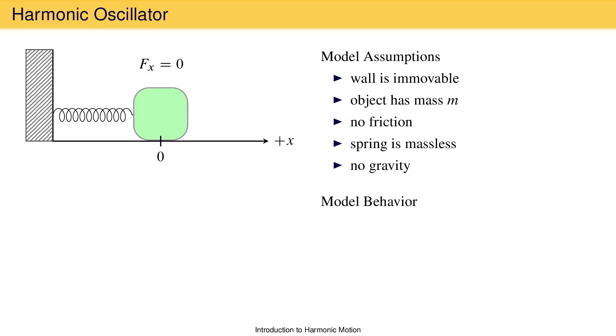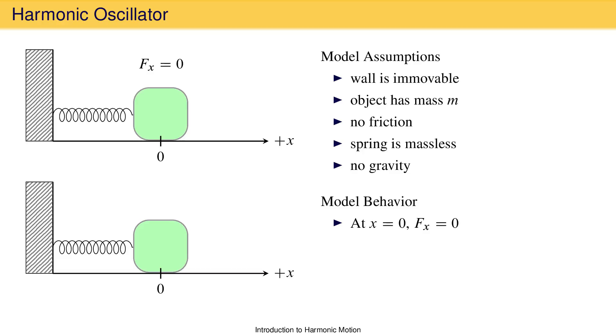Every system like this has some equilibrium position, usually given the coordinate zero where the force is zero. Now we are going to take this mass at the equilibrium position and push it toward the wall so that the spring is compressed compared to its normal equilibrium length. When we do this, we will find that the spring exerts a force on the mass in the positive x-direction.